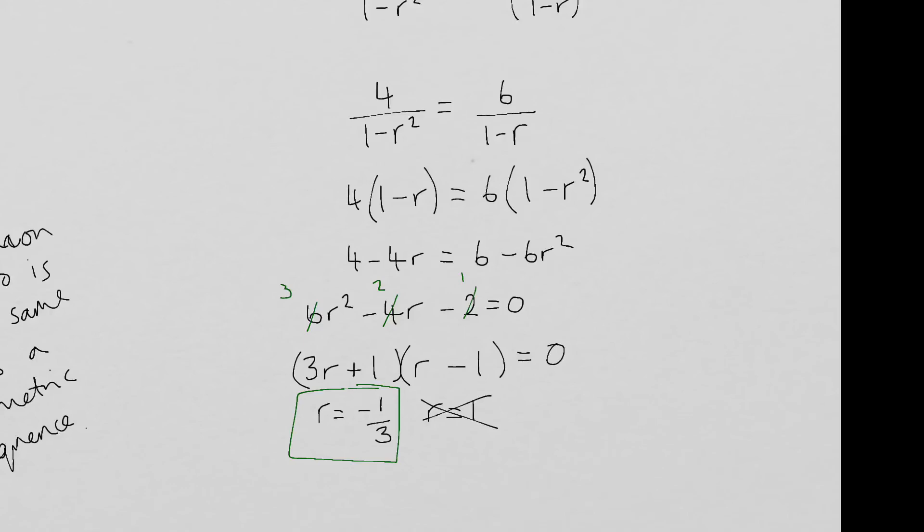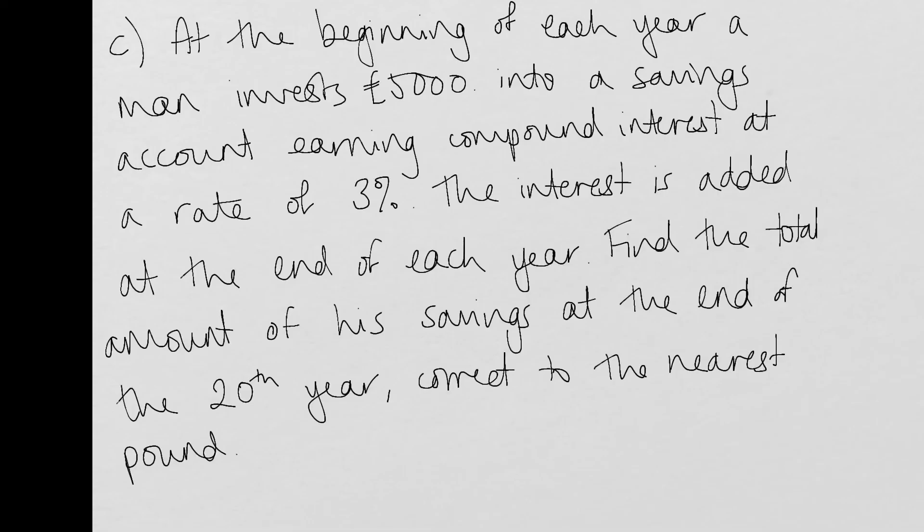So the final solution here is going to be this R is equal to minus one over three. Thank you. Right, next example. So here is a final example of a question that we're going to look at today. And this, I suppose, is sort of categorised as the sort of modelling, where we would use the geometric series to model real life situations.